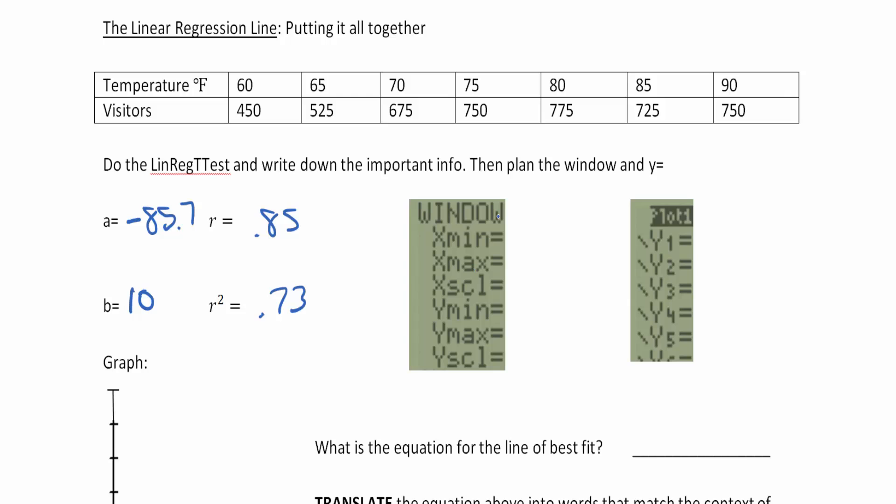Now let's plan out our window here. Zoom 9 will get you the answer, but I prefer that you would actually look at your data set and figure out your x minimum is 60 and your x maximum is going to be 90. Maybe I'll go from 60 to 90 by fives so I can see more detail.